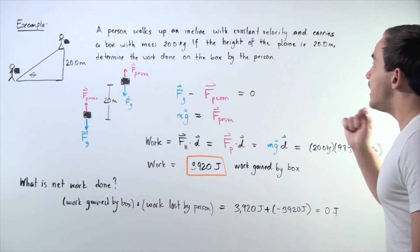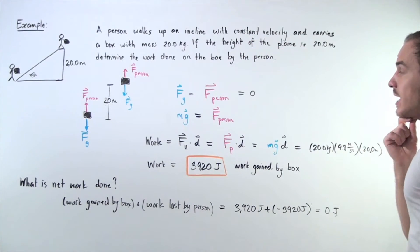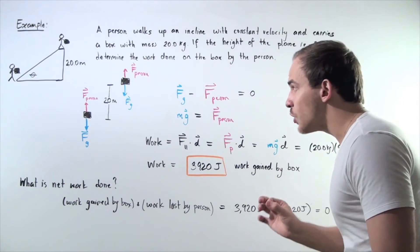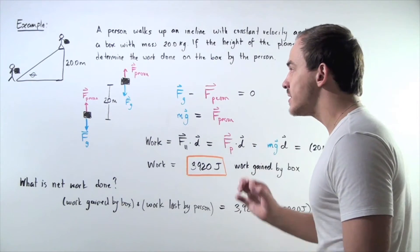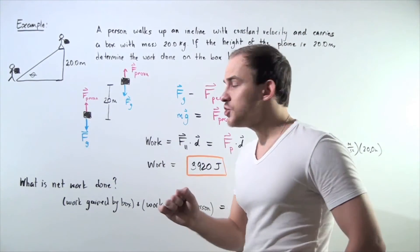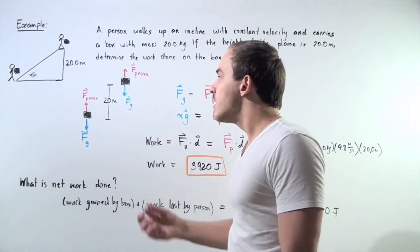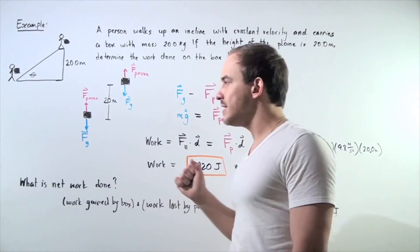Now notice that we have constant velocity, so that means we have zero acceleration. According to the second law of motion, if we sum up these forces, their sum is equal to zero.